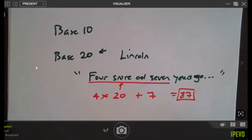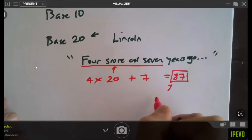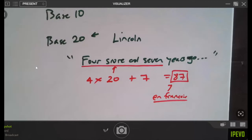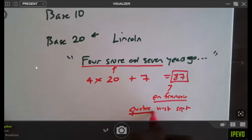Four score and seven years ago — how many years ago is that? 87. Because 'score' is an old word for 20. Abraham Lincoln was actually saying 'four twenties and seven years ago.' He was actually speaking base 20. Base 20! Amazing. And there are still vestiges of base 20 in many languages. How do you say 87 in French? The French literally say 'four twenties and seven' — just like Abraham Lincoln. French is speaking base 20 still to this day.